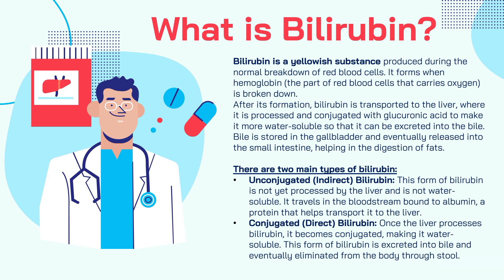So what is bilirubin? Bilirubin is a yellowish substance produced during the normal breakdown of red blood cells. It forms when hemoglobin — the part of red blood cells that carries oxygen — is broken down. After its formation, bilirubin is transported to the liver where it is processed and conjugated with glucuronic acid to make it more water soluble so that it can be excreted into the bile. The bile is stored in the gallbladder and eventually released into the small intestine, helping in the digestion of fats.